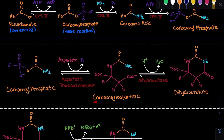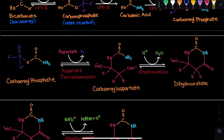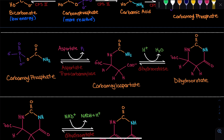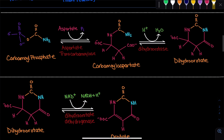We get carbamoyl aspartate, and in the next step we need to close this ring structure because pyrimidines are closed ring structures. We undergo dehydration — we lose one of the hydrogens on the nitrogen and one of the oxygens on the carboxyl end, forming H2O. Since we've dehydrated it, there is the possibility to form a bond between that carbon and nitrogen. We see sigma bond formation between this nitrogen and this carbon, and now we've closed the ring. This molecule is called dihydroorotate.